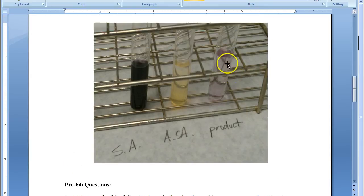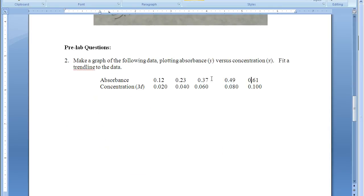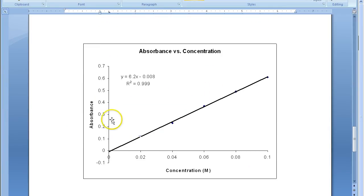If I scroll back up to this unknown that we just qualitatively looked at last week and said, it looks like there is some salicylic acid in it. If we put this solution into our spectrometer and record now an absorbance for that solution, we can use this equation to determine the concentration, the x, the concentration of that solution, how much salicylic acid is present in it.